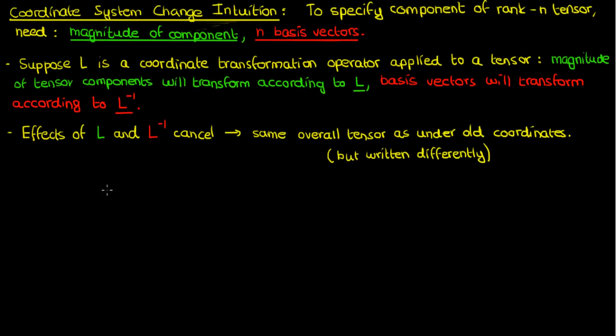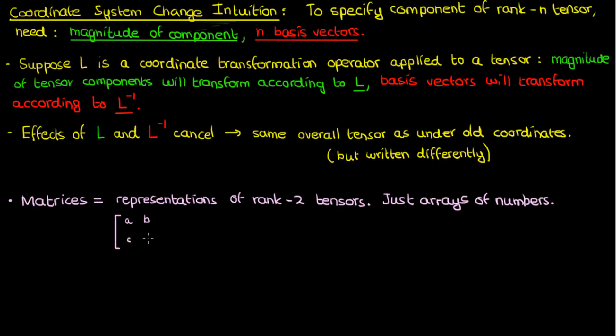Just some quick notes on tensors versus matrices. I said in the last video that you can use matrices to represent rank 2 tensors. Remember, matrices are just collections of numbers packaged inside brackets. When I specify a matrix, I can just write down the matrix and its elements. I don't have to add anything on top of that.